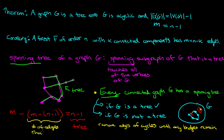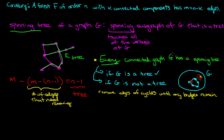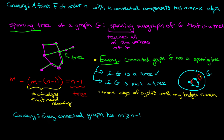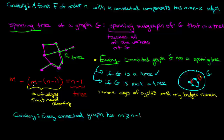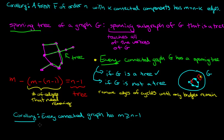That number M minus (N minus 1) is the number of edges that need to be removed. This tells you something quite nice: every connected graph has to have at least N minus 1 edges. Because if you have a connected graph, you go through this process to build a spanning tree, and the number of edges you removed has to be zero or positive, not less than zero. So M has to be greater than or equal to N minus 1. This is the corollary that's going to help us with our next proof.